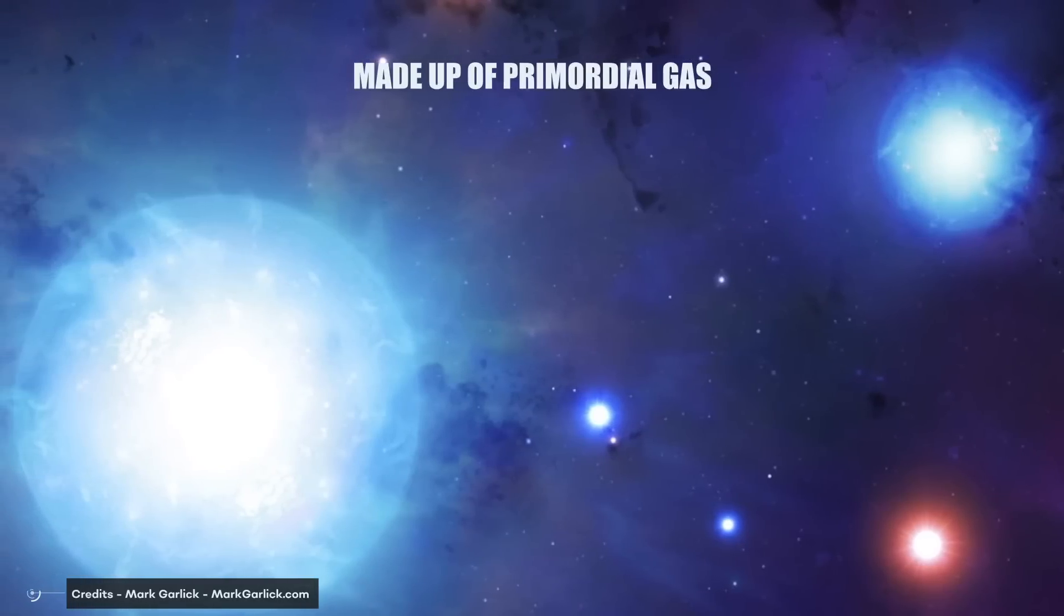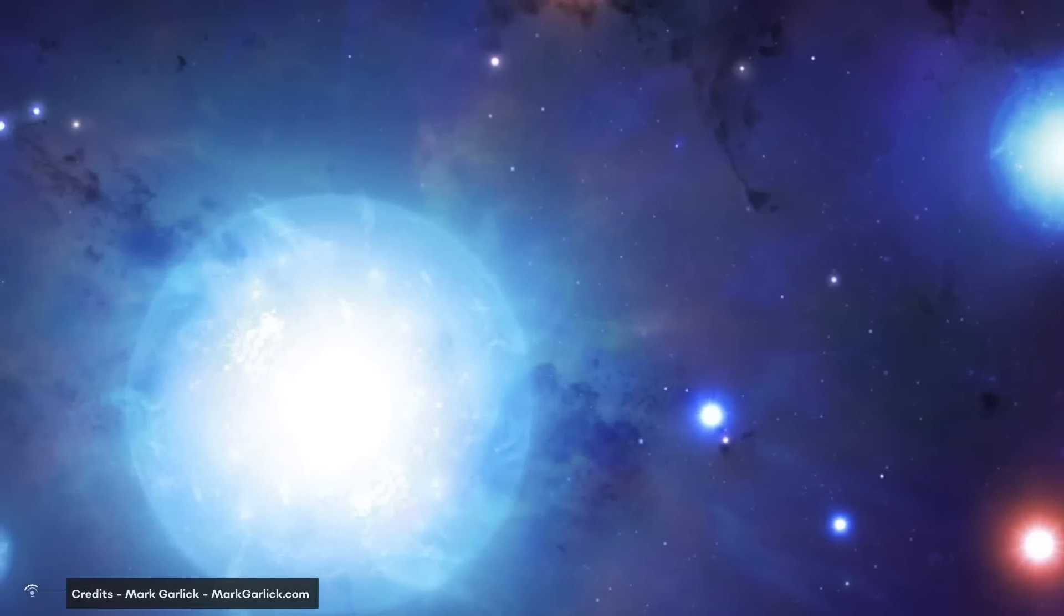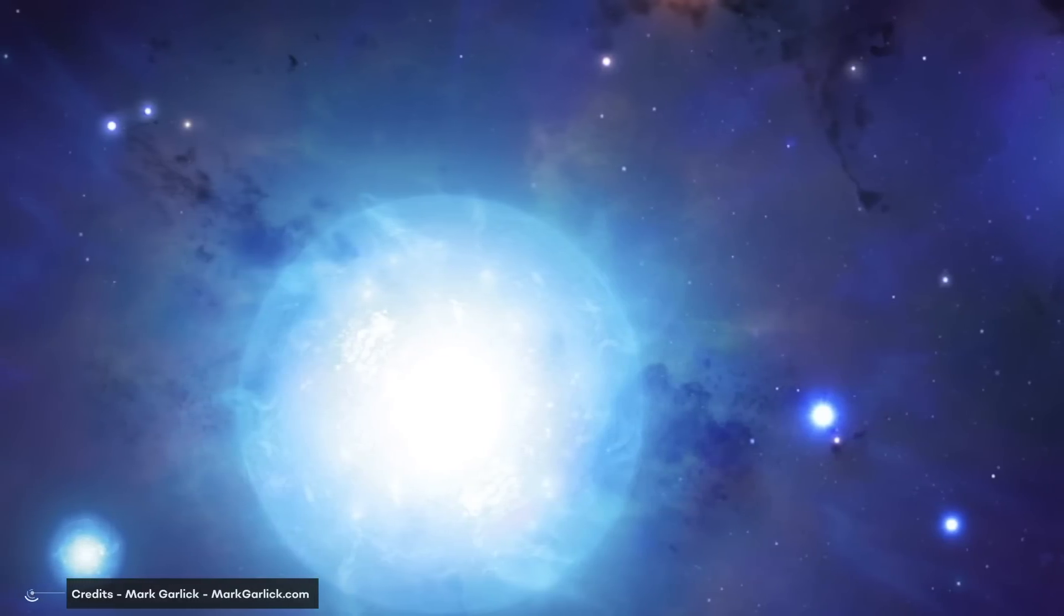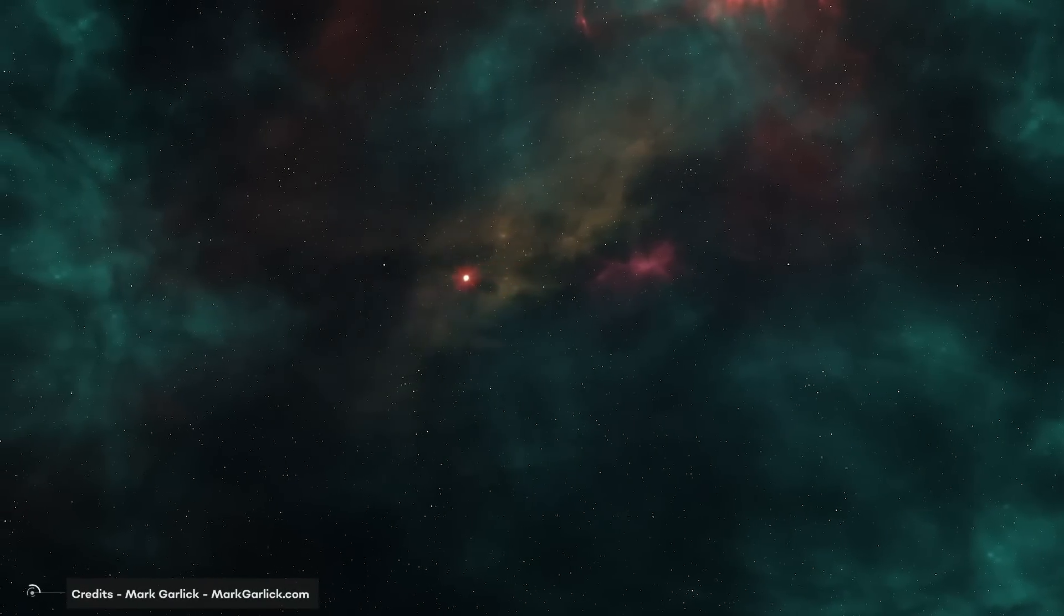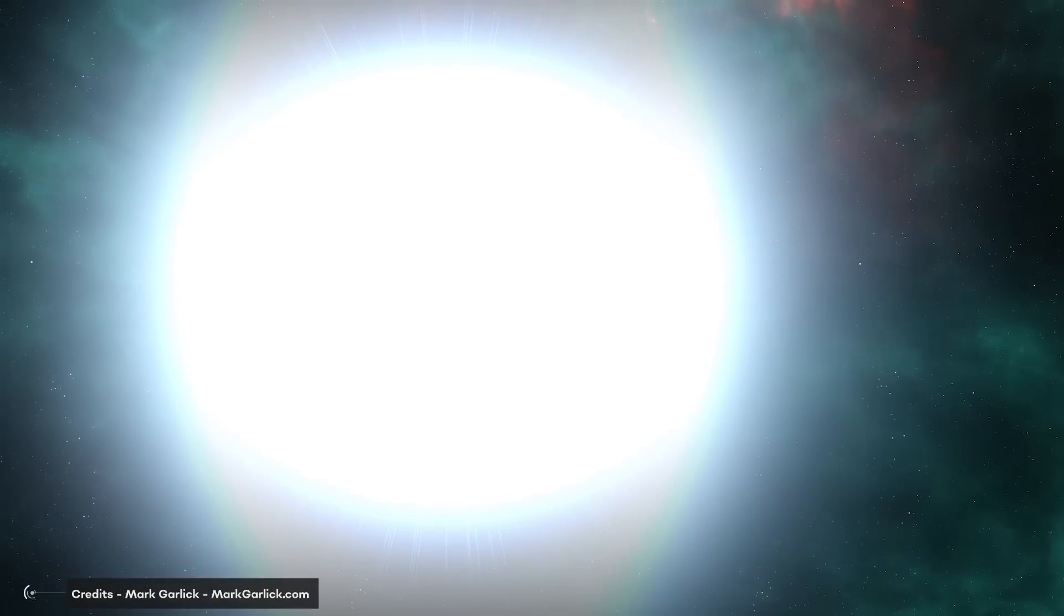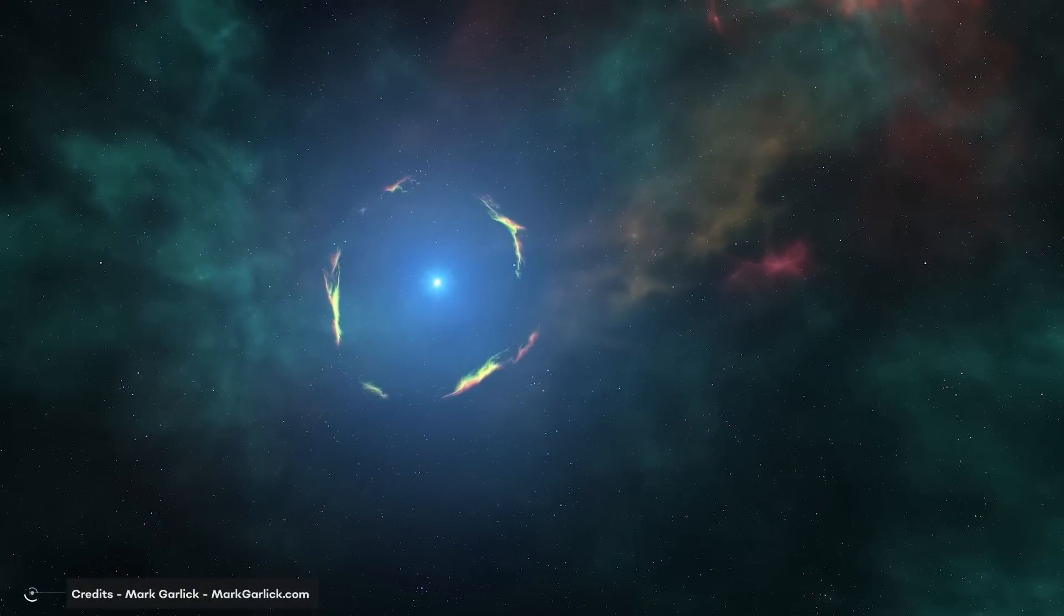Population III stars are made up of primordial gas, primarily hydrogen and helium, the same primordial gas that filled the universe right after the Big Bang. They are thought to be the very first stars to have formed. These were big stars that after a very short lifetime would have gone supernova, causing their elements to be spread throughout the cosmos and giving birth to other stars.